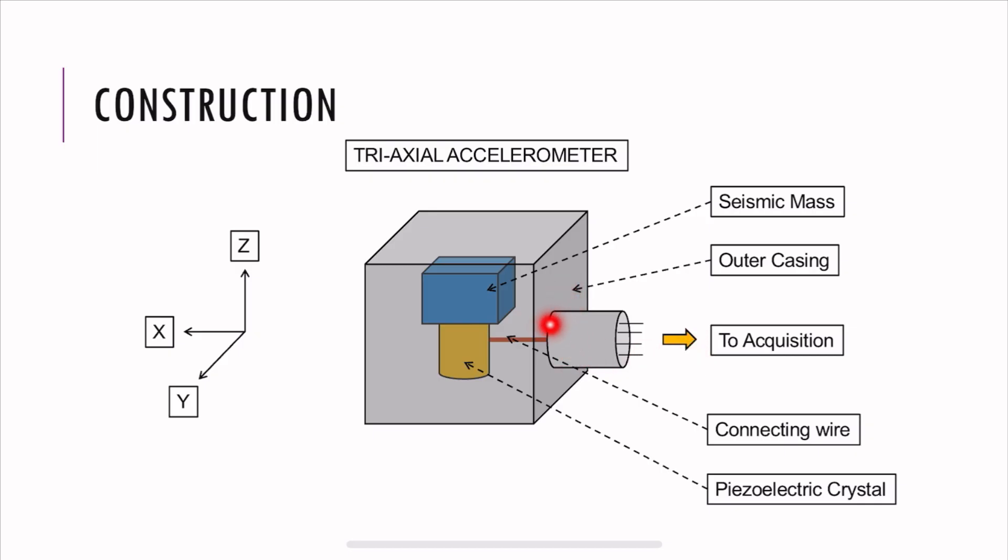These are the directions the accelerometer is measuring. This is like the right-hand thumb rule. The Z represents your thumb finger, the X your index finger, and Y the middle finger. Usually the accelerometers have these directions engraved on their surface. For example, here it'll be like Z, here it'll be like Y, and on the other side that you cannot see will be X. So it means that the accelerometer is measuring those directions if you mount them according to this right-hand thumb rule.